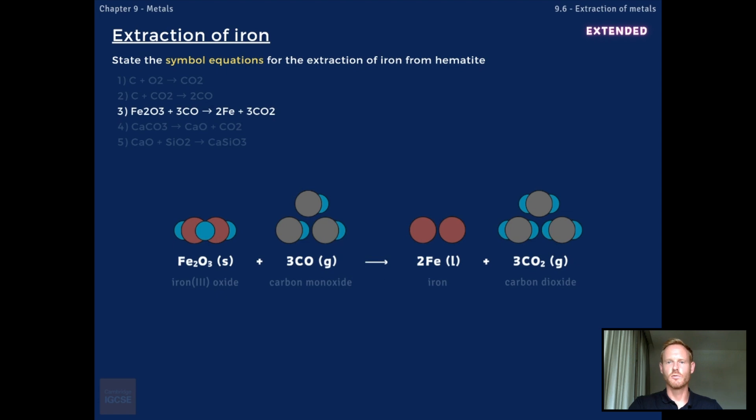Then, iron oxide is reduced by the carbon monoxide to produce molten iron and carbon dioxide. The symbol equation is Fe2O3 plus 3CO forms 2Fe plus 3CO2.